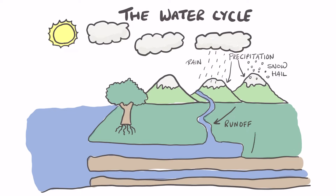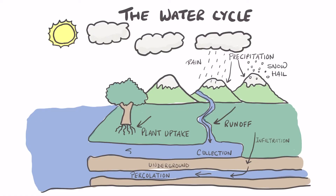There's also infiltration that occurs, in which water finds its way into underground areas. Plants also find a way to use this water by collecting it through their roots. The water that has infiltrated the ground percolates through the underground and creates a water storage underneath the ground.